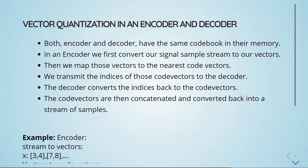Taking a look into vector quantization in an encoder and decoder system. Both the encoder and the decoder have the same codebook in their memory. In an encoder, we first convert our signal sample stream to vectors, then we map those vectors to the nearest code vectors.